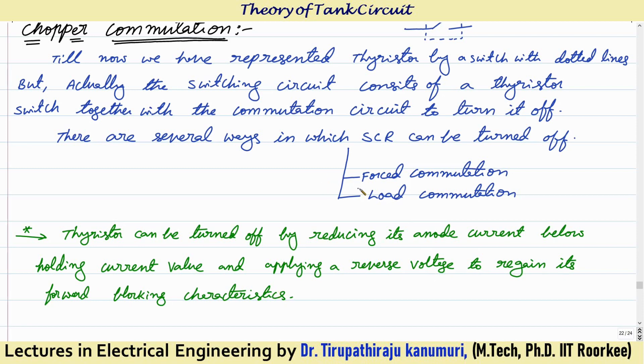In order to turn off the thyristor which is already conducting, first we have to bring its anode current below the holding current. After bringing it below the holding current, we have to apply some reverse voltage for some time so that it can regain its forward blocking characteristics. After that we can apply the forward voltage again and it can block it. This process is called the commutation process.